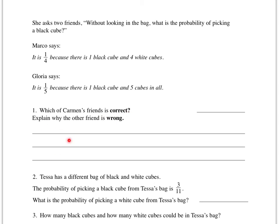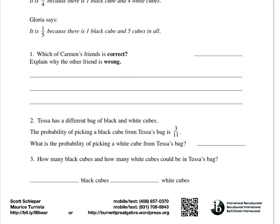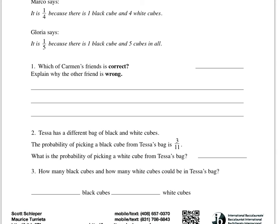Number two says that Tessa has a different bag of cubes and the probability of picking a black cube from Tessa's bag is three out of eleven. What's the probability of picking a white cube from Tessa's bag? So you have to calculate, well if it's just black and white cubes and the probability of picking a black cube is three out of eleven, what you do have to do is figure out how many are left out of eleven and put that number over eleven.